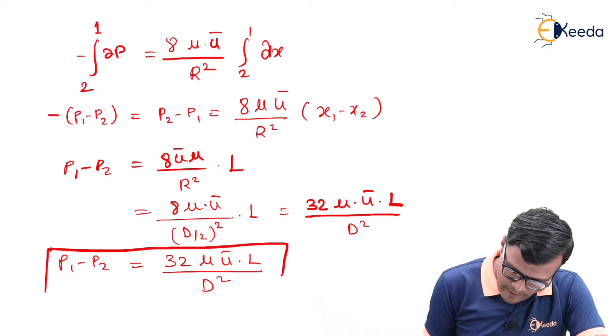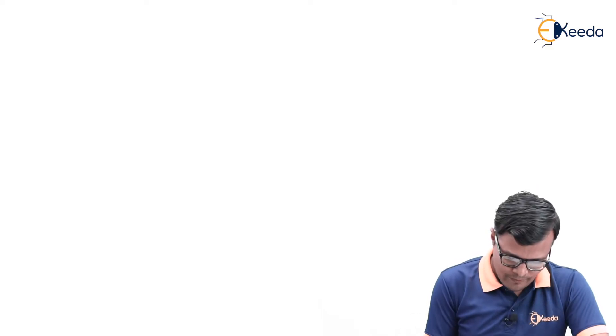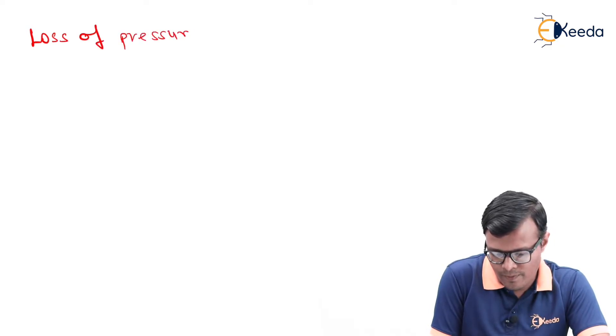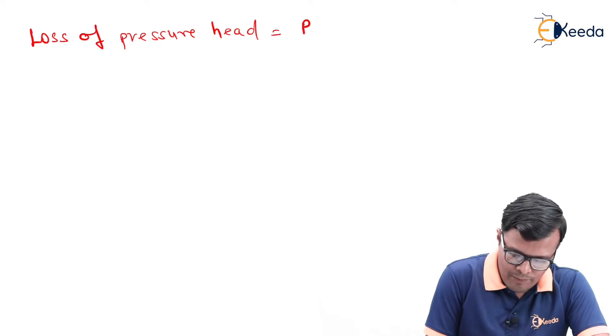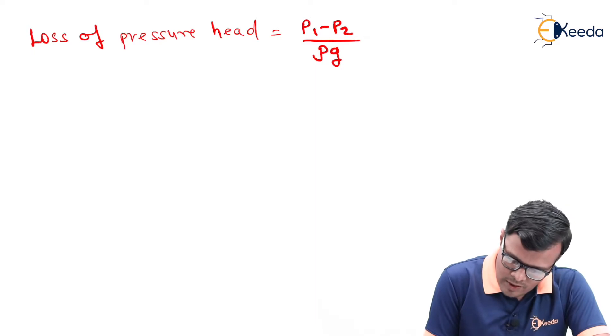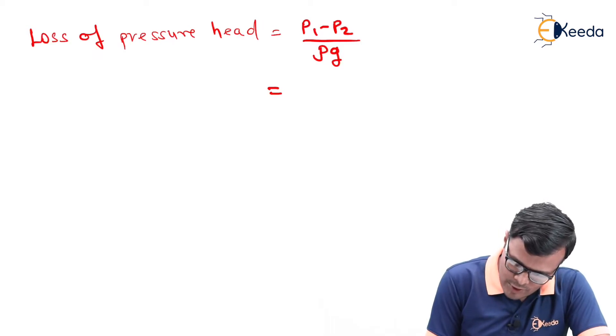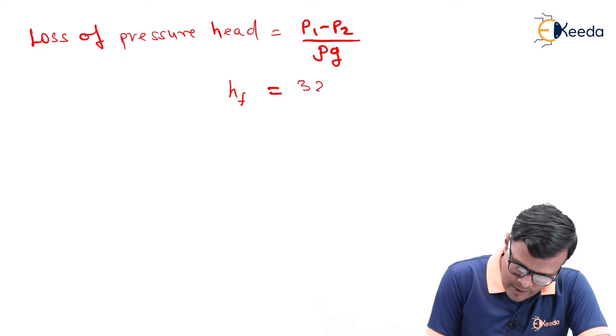P1 minus P2 is equal to 32 mu u bar into L upon diameter square. This is the basic relation to find the pressure difference. But in fluid mechanics we require the drop of pressure in terms of its length, so for that purpose we have to convert it into length by dividing by gamma or rho g. Loss of pressure head, that is P1 minus P2 upon rho g, and we have calculated value of P1 minus P2 as 32 mu u bar. So this loss of head, that is head loss HF, is 32 u bar mu into L upon rho g into d square.